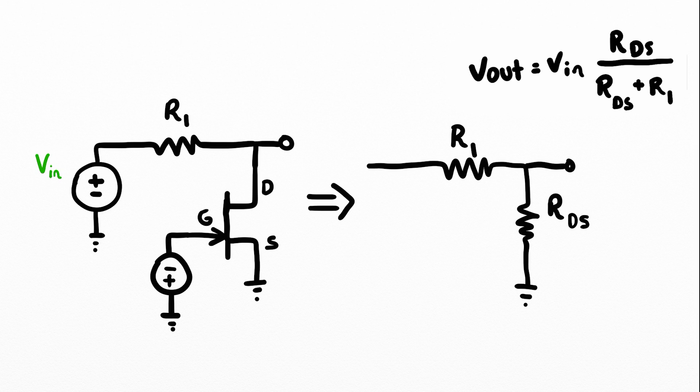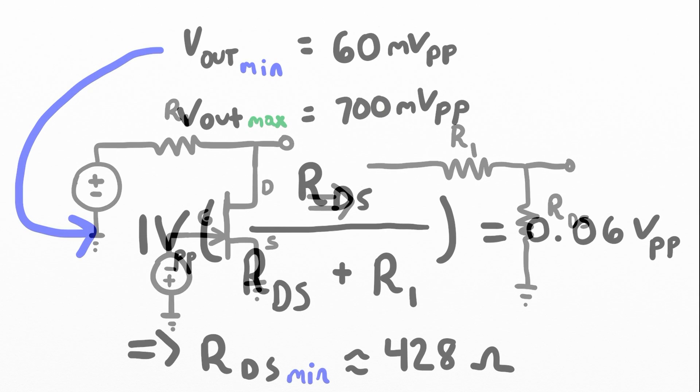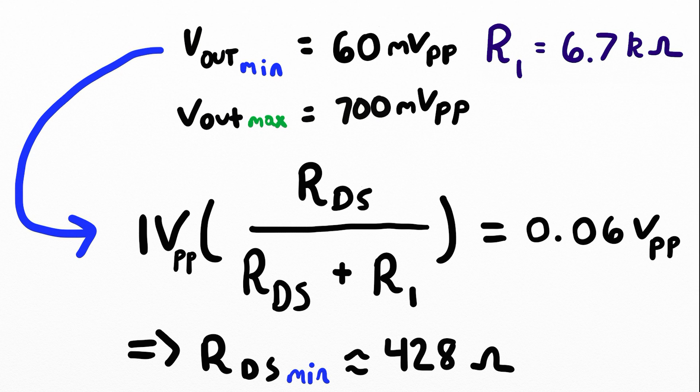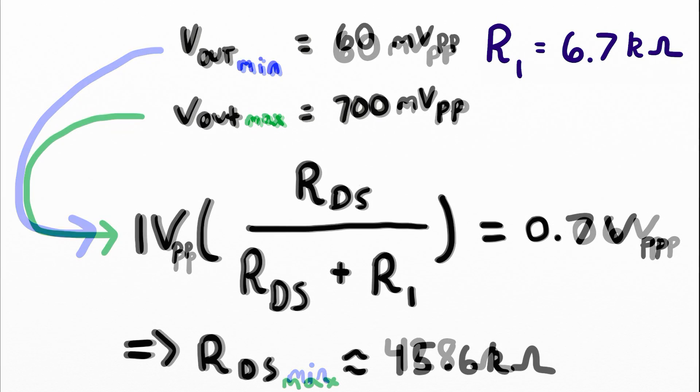We can use the measurements seen previously to figure out what is the effective resistance of the drain to source. We are now looking at the smallest value of the drain to source resistance. If we plug in the appropriate values, 60 millivolts peak to peak, 1 volt peak to peak input, and R1 to be 6.7 kilo ohms, which was used in the circuit, we get the resulting resistance of the drain to source to be 428 ohms.